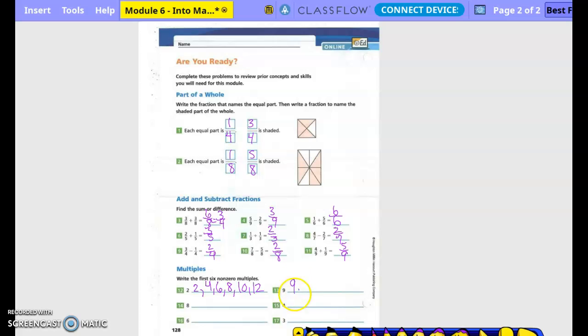Okay. Thirteen. Nine, eighteen, twenty-seven, thirty-six, forty-five, and fifty-four. Is that six of them? Okay. Number fourteen. Eight, twenty-four, thirty-two, forty, and forty-eight. So, this is just like multiplication, right? Only you're listing that in order sequential of them, right, for multiples. So, four, eight, twelve, sixteen, twenty, twenty-four. And that's six, right?